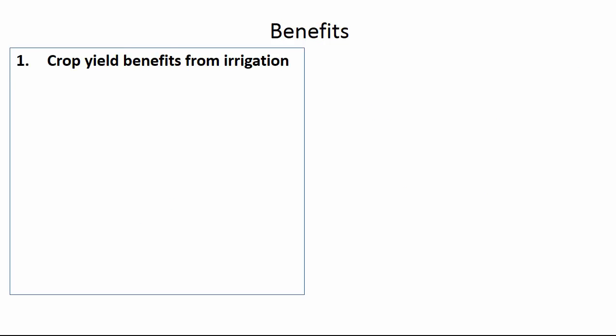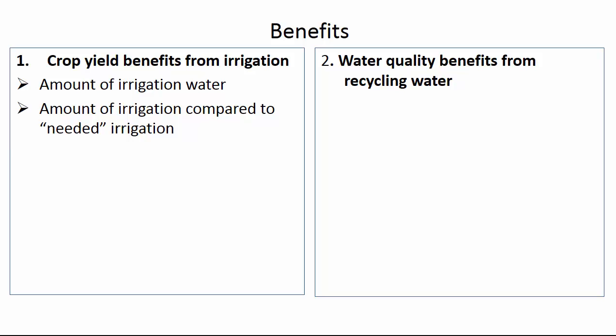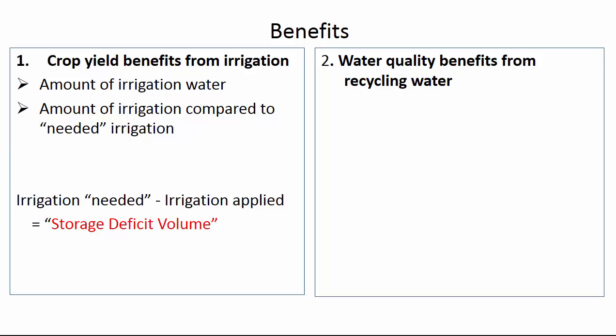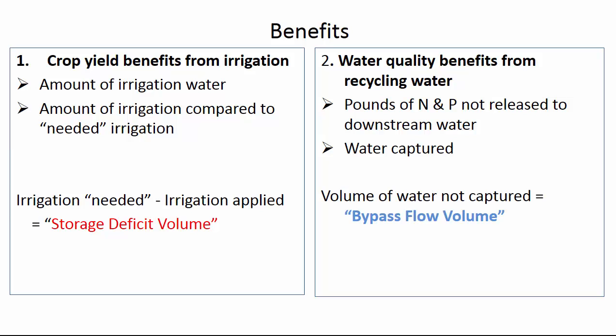There are two major benefits. The first is the crop yield benefits from irrigation, and the second is the water quality benefits from recycling water. This tool is not sophisticated enough to predict these exactly. For irrigation, we use the amount needed versus the amount available in the pond — we call this the storage deficit volume, plotted in red. For water quality, we use the bypass flow volume, which is the volume of water not captured by the pond.